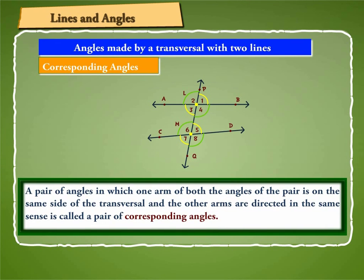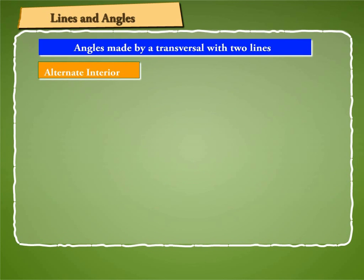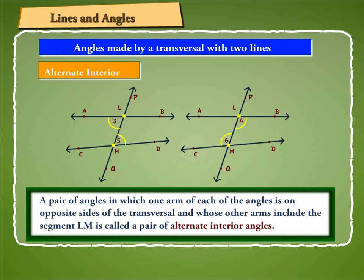Hence, a pair of angles in which one arm of both the angles of the pair is on the same side of the transversal and the other arms are directed in the same sense is called a pair of corresponding angles. A pair of angles in which one arm of each of the angles is on opposite sides of the transversal and whose other arms include the segment LM is called a pair of alternate interior angles.